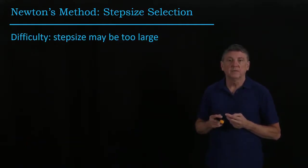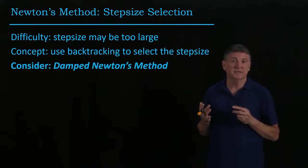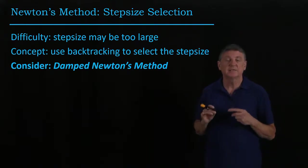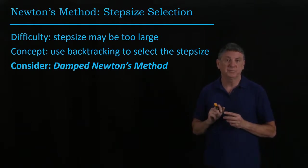A problem is that the step size might be too large. So the idea that we have is could we use backtracking to select the step size? And the answer is yes, it's a very small change to our code and it's called damped Newton's method.